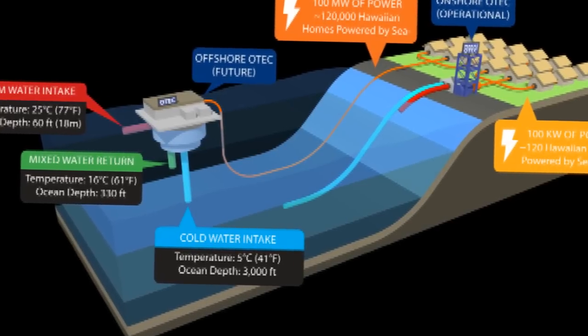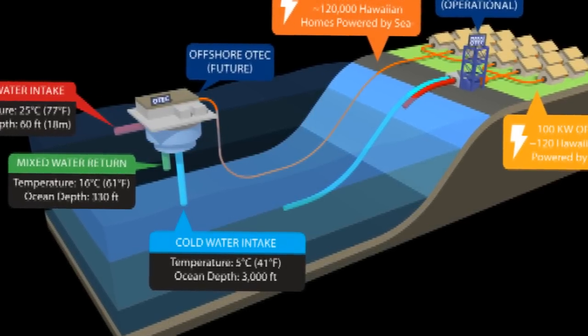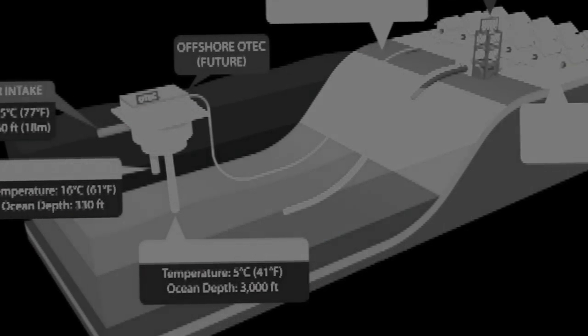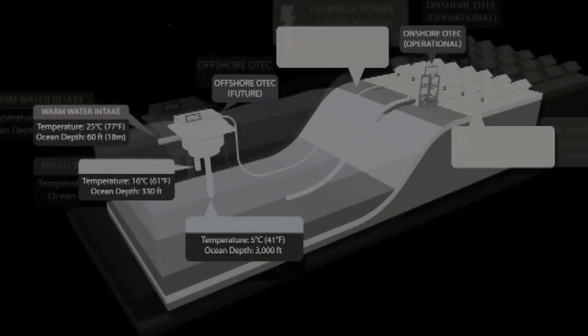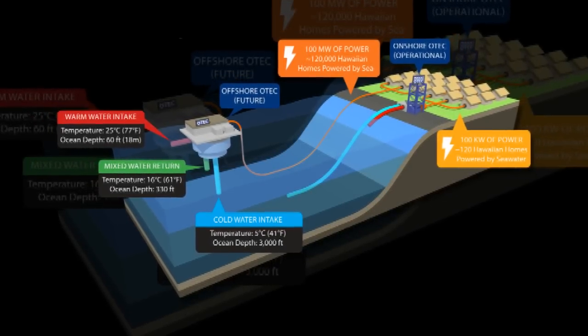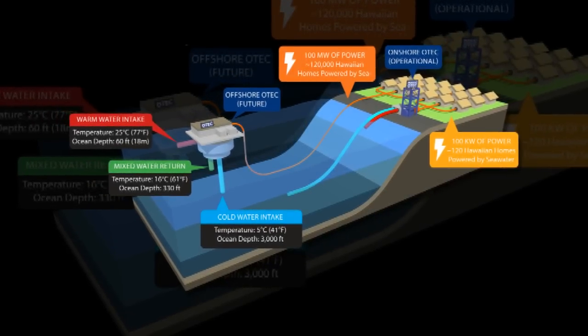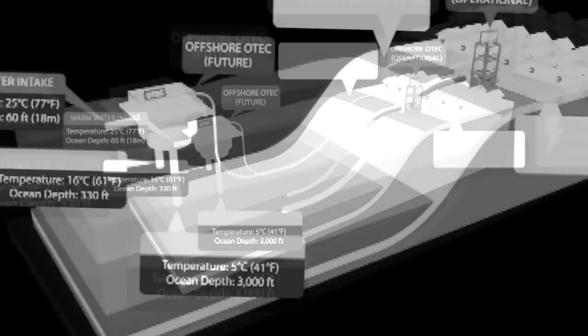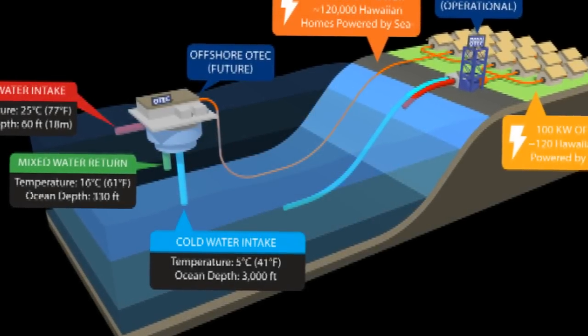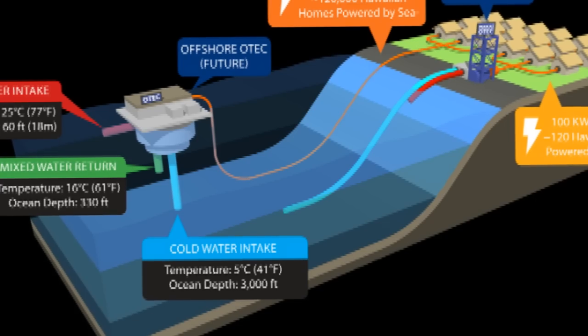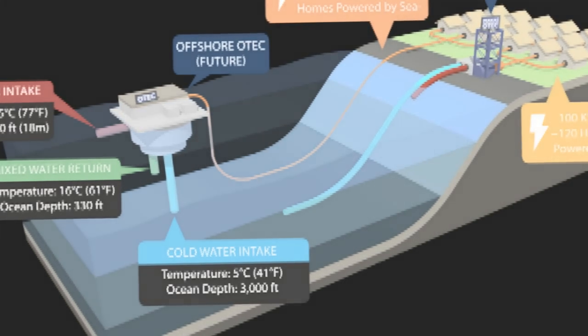An ocean thermal energy conversion power plant has gone operational. It was celebrated at the Natural Energy Laboratory of Hawaii Authority earlier this month. The governor of Hawaii, David Ige, flipped the switch to activate the plant. This is the first true closed-cycle ocean thermal energy conversion plant to be connected to a U.S. electrical grid.